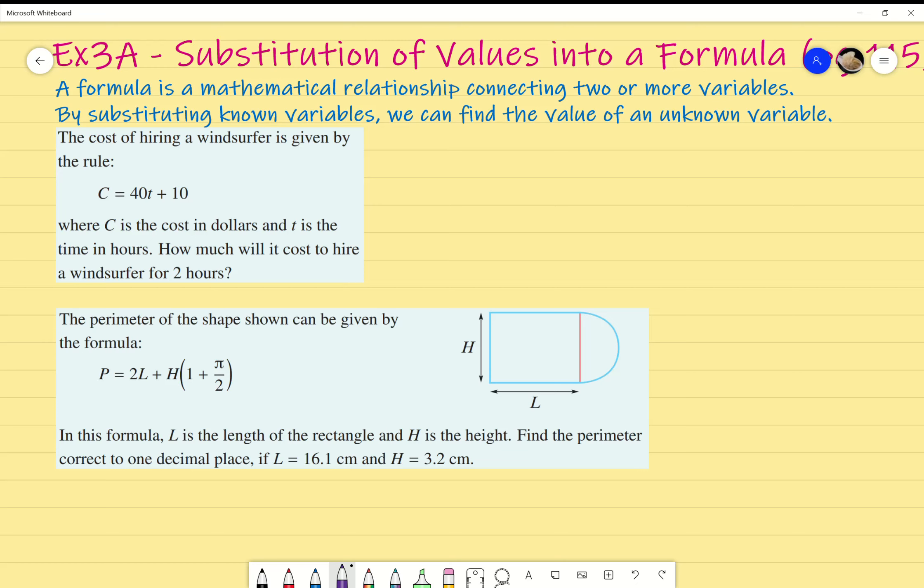And on top of that, we can see because it's 40 times T, I know it's $40 times by T. In other words, it's $40 for every hour. It's $40 an hour plus the $10 hiring fee, let's say. Okay, so how much would it cost to hire a windsurfer for two hours?